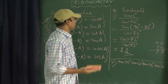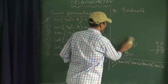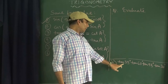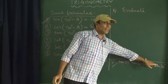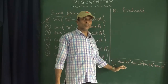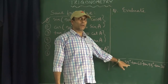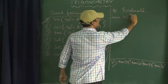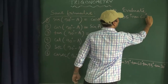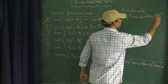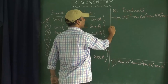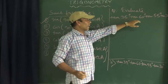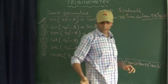Let us take one more question. Evaluate: tan35° × tan60° × tan55° × tan30°. We can see among these trigonometric ratios no operation sign is given, which means multiplication is the operation. Among these four, the first two angles will be changed and the remaining two will be kept the same.